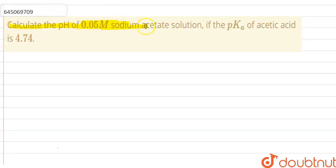Calculate the pH of 0.05 molar sodium acetate solution if the pKa of acetic acid is 4.74. Okay, so pKa is given here of acetic acid.